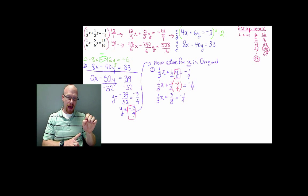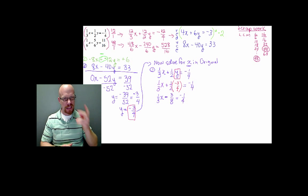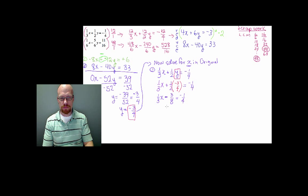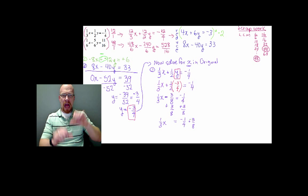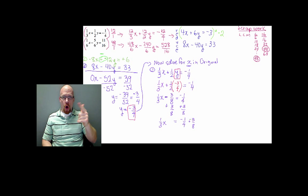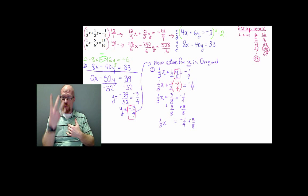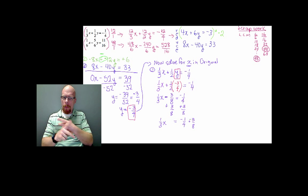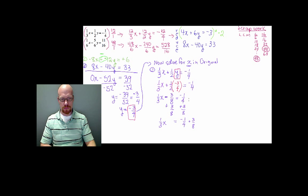I need to add three-eighths to both sides to get rid of that term. So I have one-third x equals negative one-fourth plus three-eighths. I could have used a calculator, but I want to show how to work with fractions by hand. You need the denominators to match — one-fourth can become eighths if you multiply it by two over two.